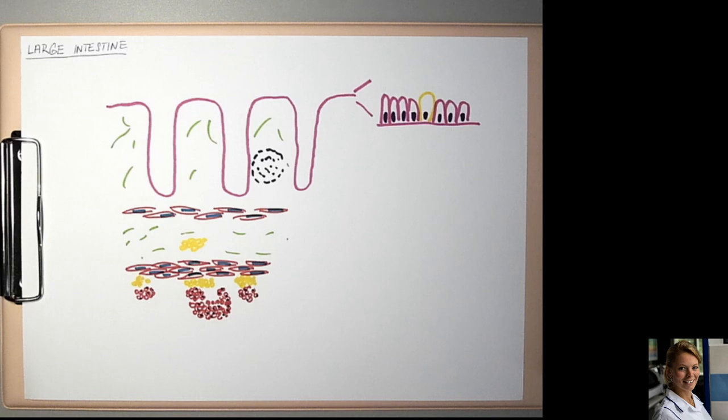And the last layer is serosa or adventitia. Serosa is a layer of loose connective tissue lined by mesothelium, one layer of squamous cells.